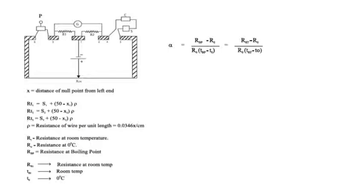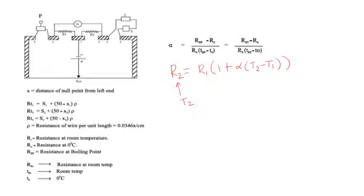We have been given this formula, where alpha is equal to the resistance at the boiling point of water minus resistance at room temperature, divided by R0, multiplied by the boiling point temperature minus the temperature at zero. The well-known formula is R2 = R1(1 + α(T2 - T1)), where R2 is the resistance at temperature T2, R1 is the resistance at temperature T1, T2 is the higher temperature, T1 is the lower temperature, and alpha is the temperature coefficient.